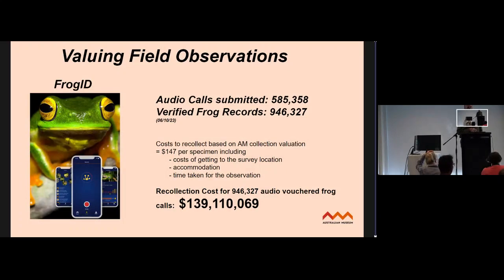FrogID involves citizen scientists going out in the field and recording frog calls into their mobile phone, submitted to the Australian Museum where experts identify those frogs. We're working on AI involvement as well. For museums, recollection is one way of valuing collections, and the Australian Museum has a figure of $147 per specimen across the collections for recollection.